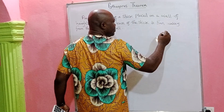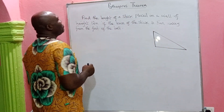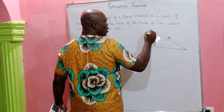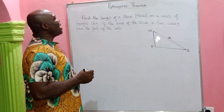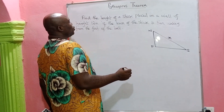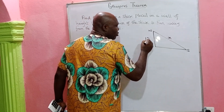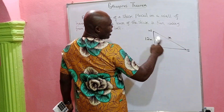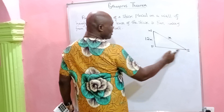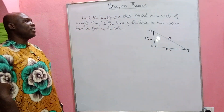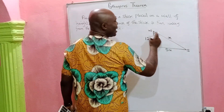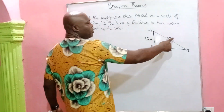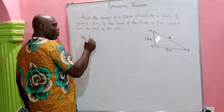This problem also involves the Pythagorean theorem. The stick leans on the wall — the wall has height 12 meters, the base of the stick is 5 meters from the foot of the wall, and the stick itself is what we want to find. Looking at the diagram, we have a right-angle triangle where the hypotenuse is the length of the stick, which is x.